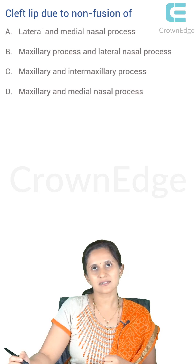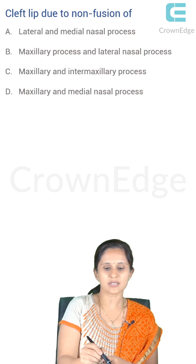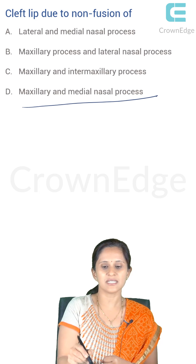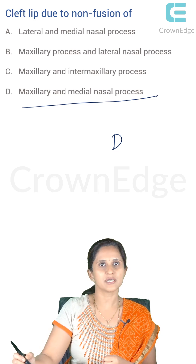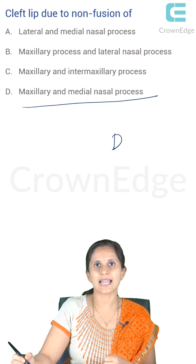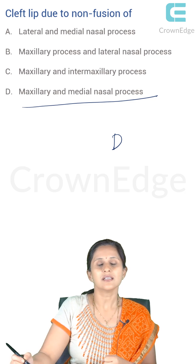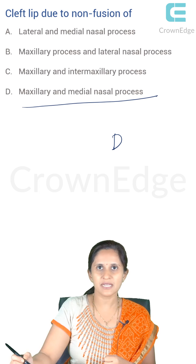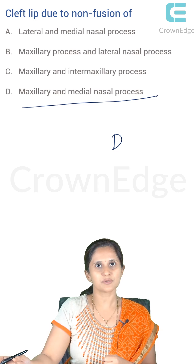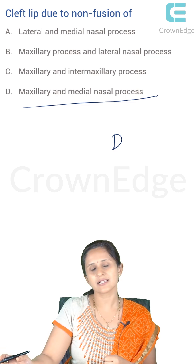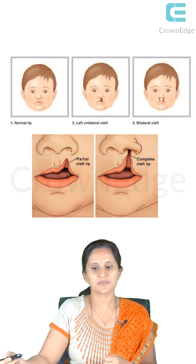Cleft lip occurs due to non-fusion of the maxillary process and the medial nasal process — the answer is D. If there is lack of union between the maxillary process and lateral nasal process, we have cleft palate. Remember: lack of fusion between maxillary and medial nasal process results in cleft lip; lack of fusion between maxillary process and lateral nasal process results in cleft palate.